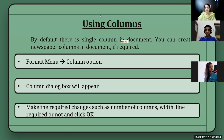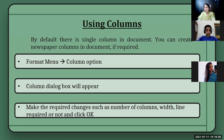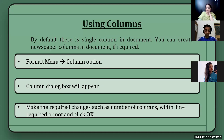Columns work differently from text boxes. With columns, the text automatically moves to the next column when it reaches the end. With text boxes, you have to specify the size and content manually. I will show you practically how to use columns. Then the column dialog box will appear where you can set the number of columns, their width, and whether to display a line between columns, then click OK.